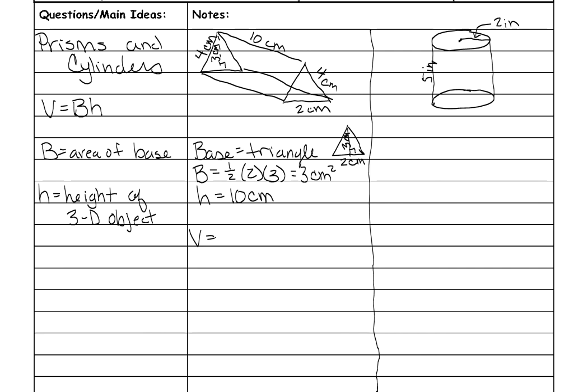So to find the volume, you multiply 3 times 10, which is 30 centimeters and it is cubed because volume is three-dimensional. You're finding the inside of a three-dimensional object and so your units must be cubed.